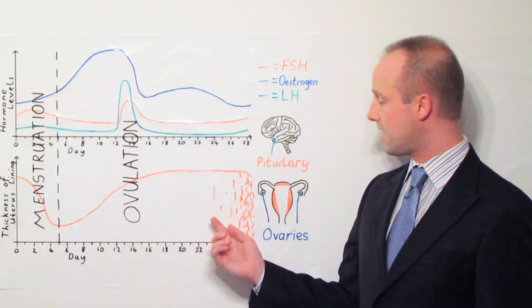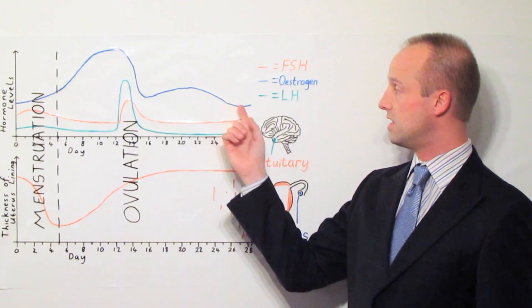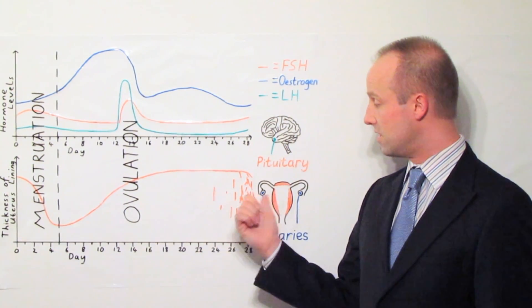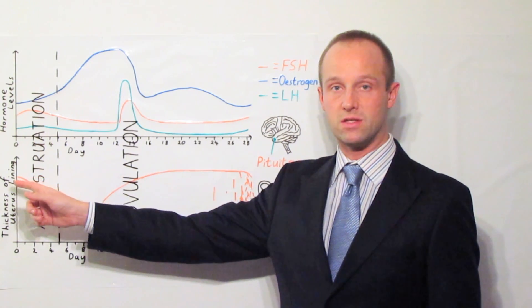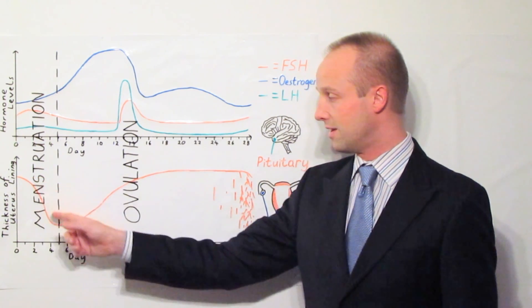But otherwise, when we get towards the end of the month, the levels of oestrogen drop again, the lining of the uterus starts to break down and it's getting ready for the next cycle of menstruation which starts at the beginning of the next month.